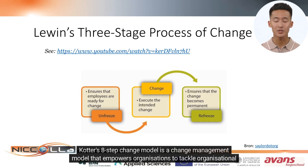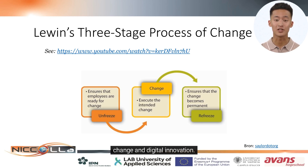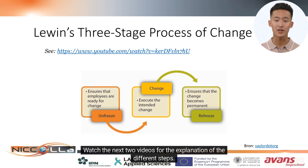Kotter's 8-step change model is a change management model that empowers organizations to tackle organizational change and digital innovation. Watch the next two videos for the explanation of the different steps.